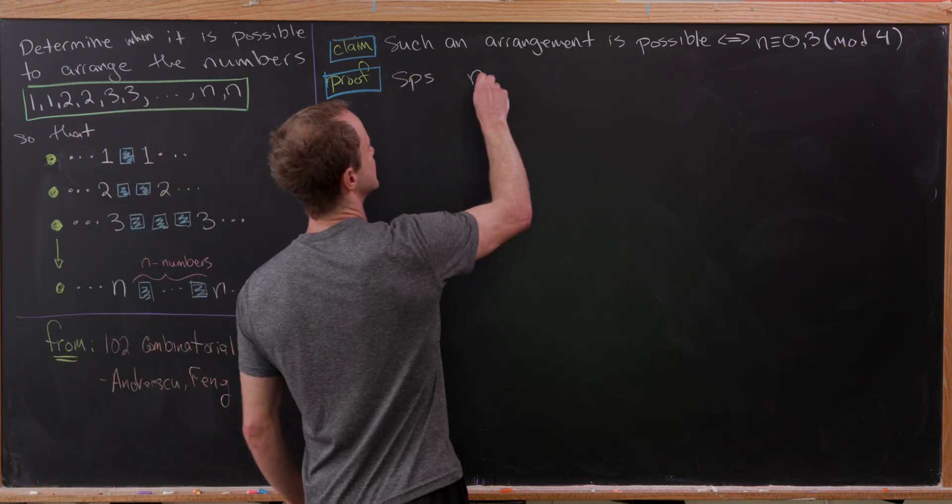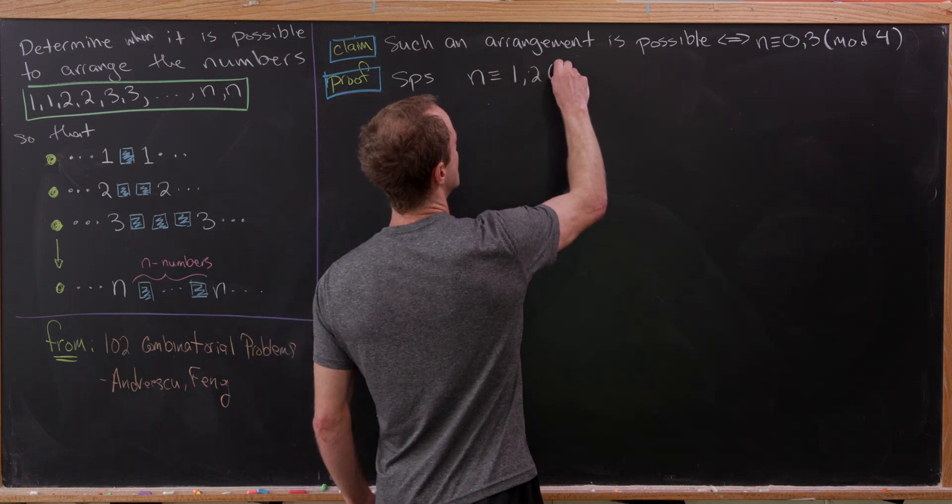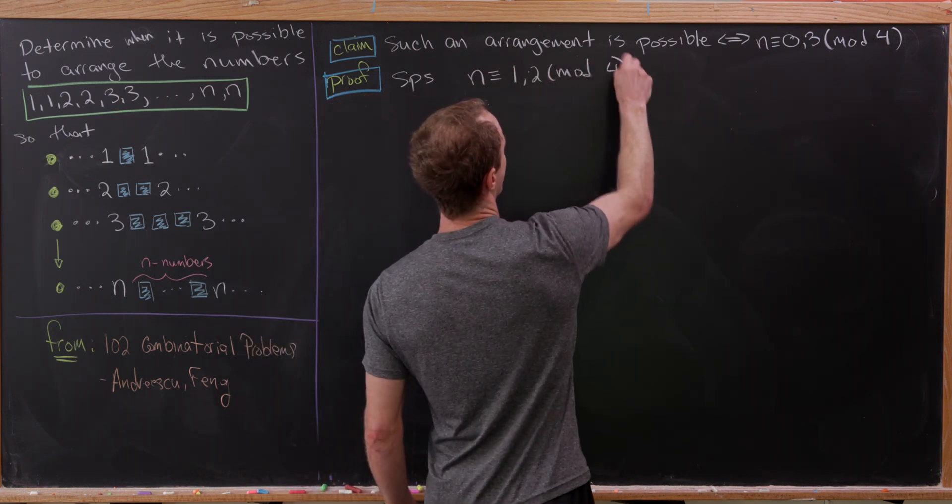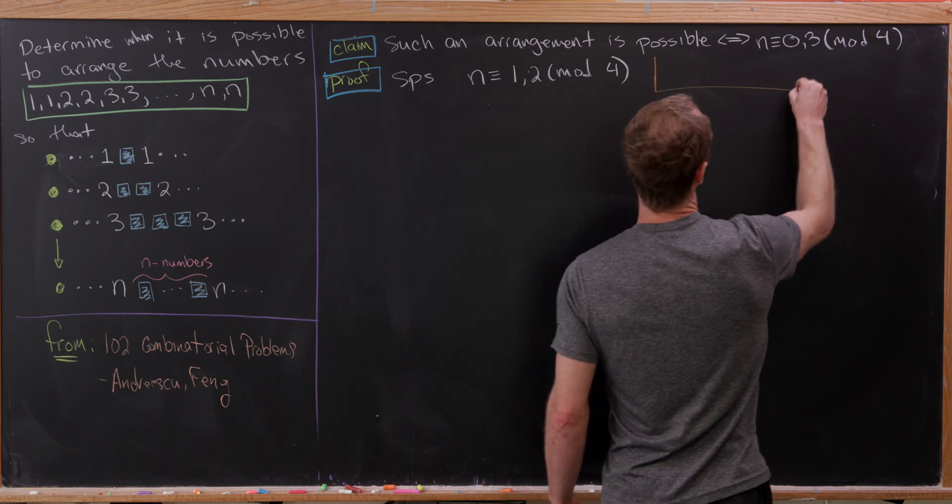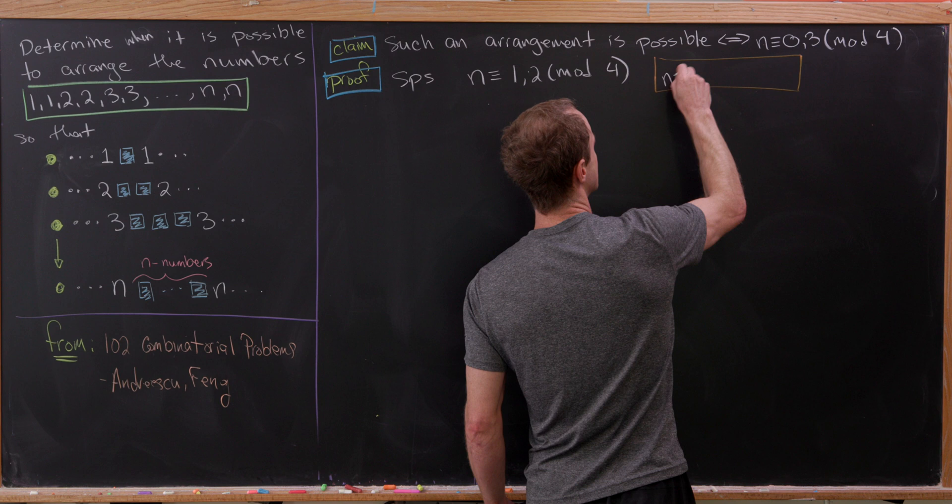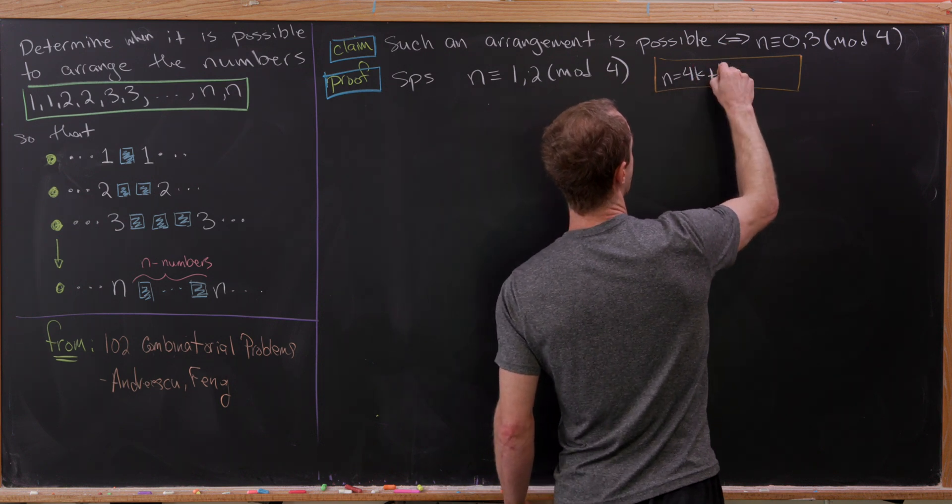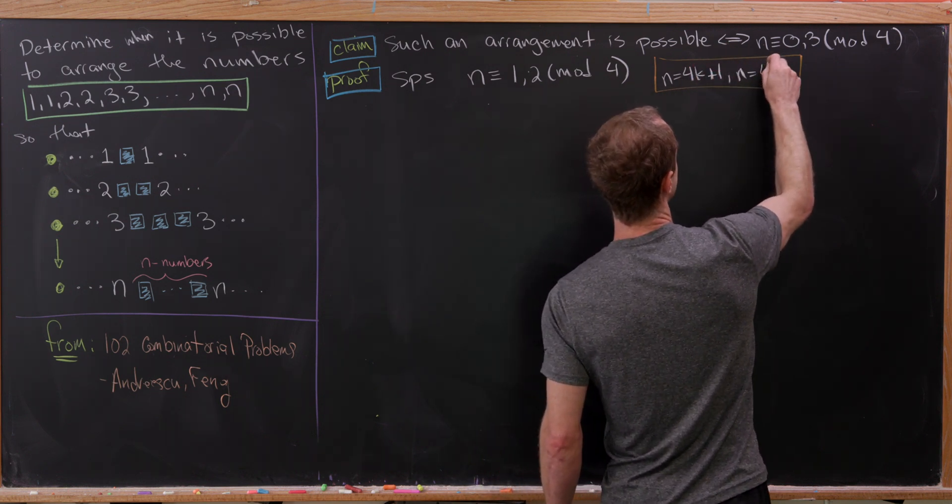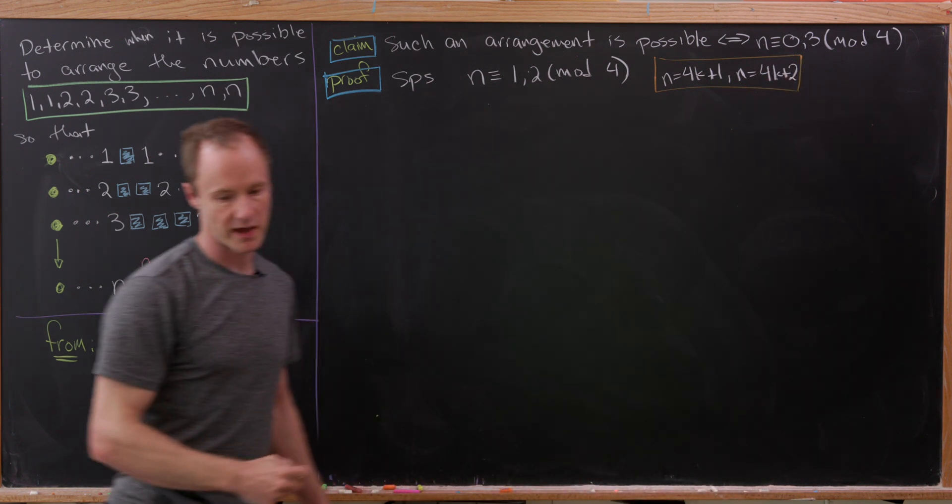Let's suppose that N is congruent to 1 or 2 mod 4. As a quick reminder, that means that N is equal to 4 times K plus 1 or N is equal to 4 times K plus 2.